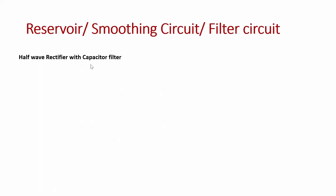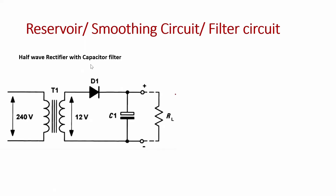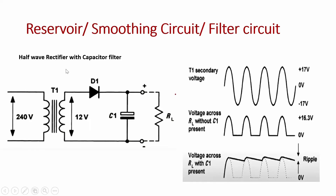Next is the half-way rectifier with a capacitor filter — the reservoir and smoothing circuit. A capacitor is connected in parallel with the load resistance RL. During the positive half cycle, the circuit acts as a closed circuit, the load receives current, and the capacitor also receives current and begins charging toward the peak voltage.